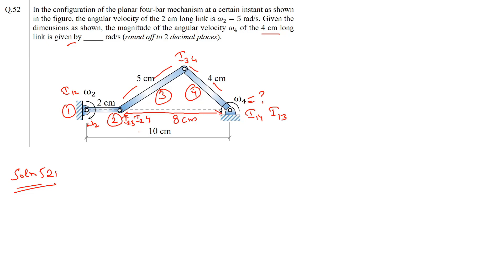Now if you apply the angular velocity relation at point I24, applying angular velocity relation: ω2 into I12 is equal to ω4 into I14. This we know is 5 into 2.